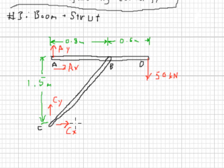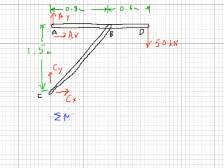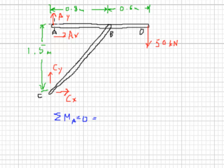In order to calculate the reactions at CX and AX, we can take the moments about A and C. Summing the moments about point A, they have to equal zero. Any of the A forces go right through point A, multiplied by zero, so we can ignore them. Likewise, CY goes right through point A with zero moment arm, so we ignore that too. The only two forces we need to deal with are the 50 kN load and CX. The forces at point B are internal and have no effect on the entire system.